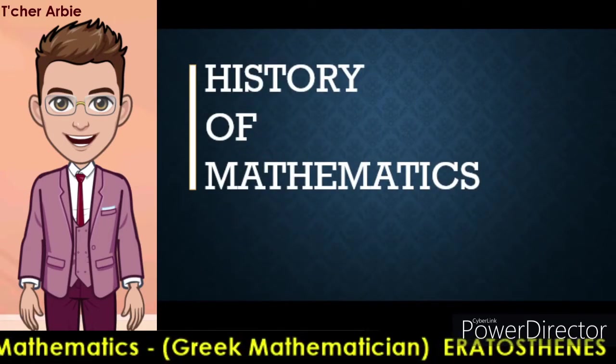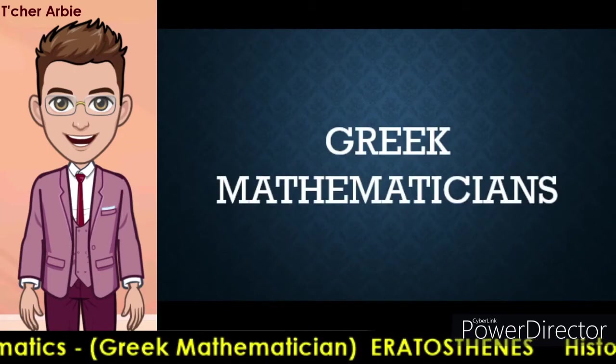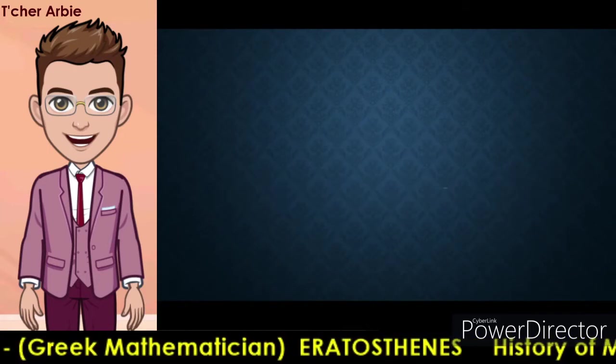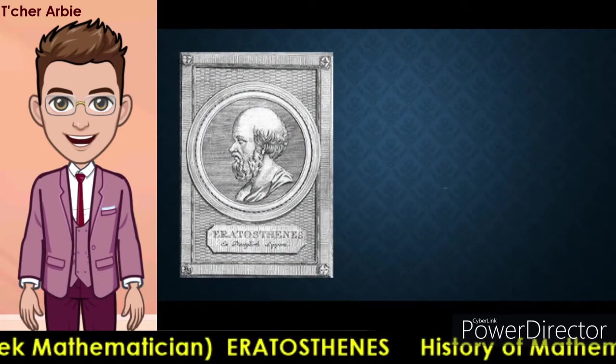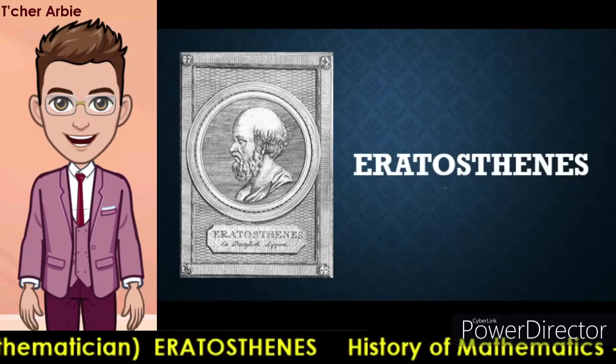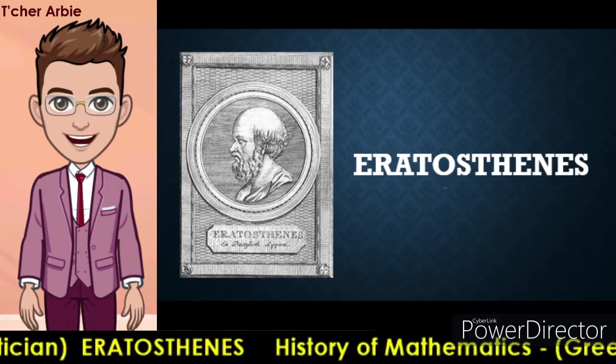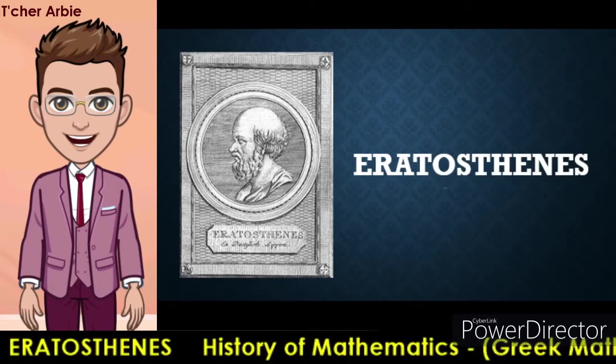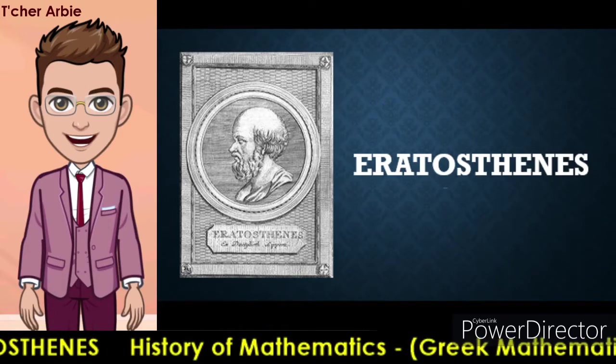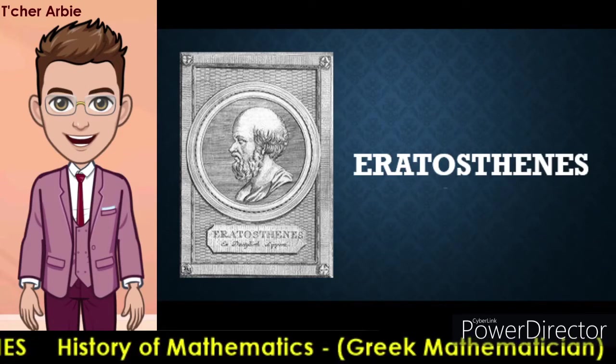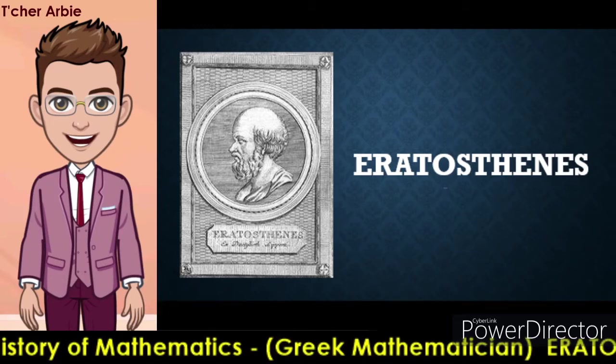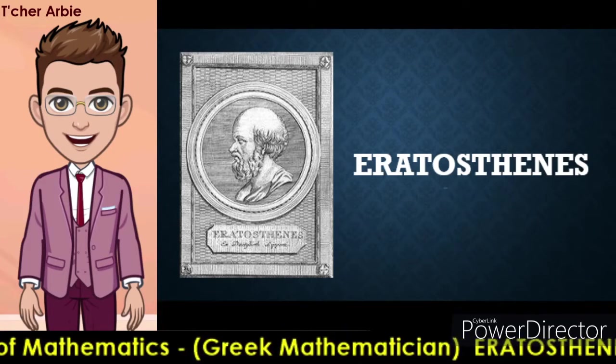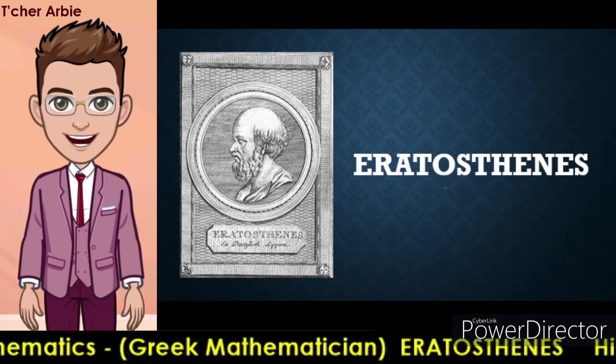Let's talk about the history of mathematics and Greek mathematicians, specifically Eratosthenes. Eratosthenes was an ancient Greek mathematician, poet, and astronomer who is known as the father of geography. Eratosthenes was the first person to use the word geography.